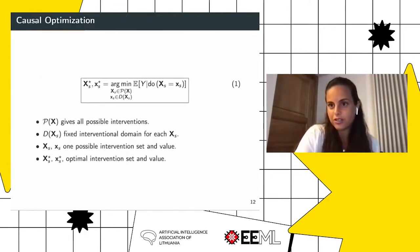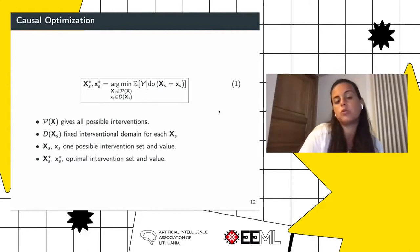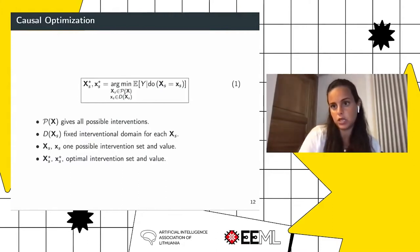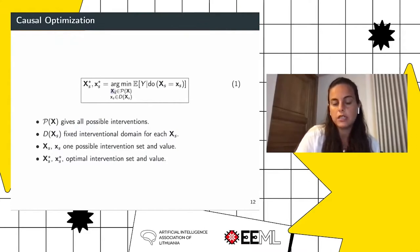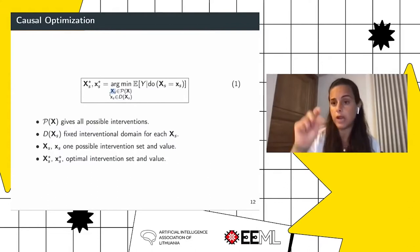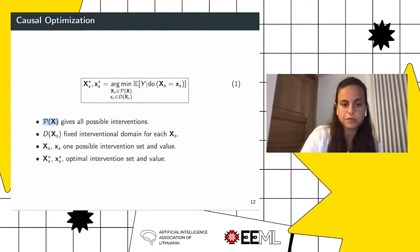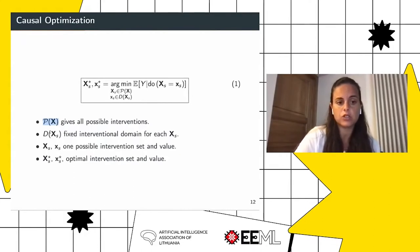Given these causal concepts, what we want to do in a causal optimization problem is minimize a causal quantity. For example, in the prostate-specific antigen case, we want to minimize the probability of cancer given a specific intervention. We want to select the intervention variable — for example, statin drugs or aspirin level — to minimize this causal quantity, selecting both the intervention set and the intervention level. With P of X, we give the power set — all possible interventions we can perform in a causal graph. The intervention level is selected in an interventional domain that is application-specific and generally fixed by the agent.